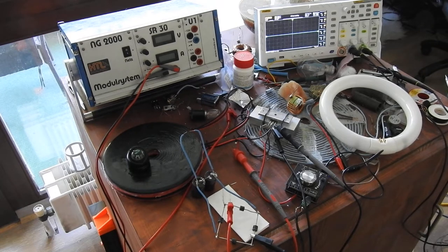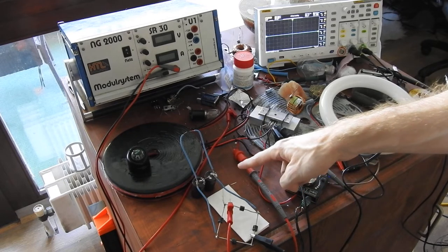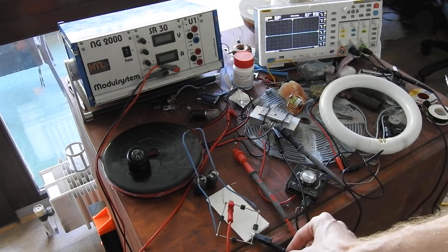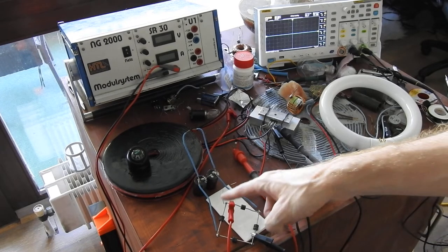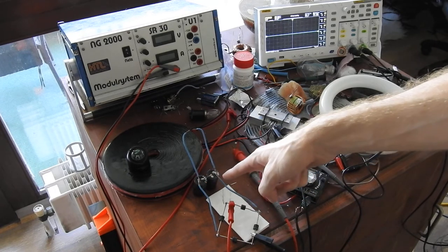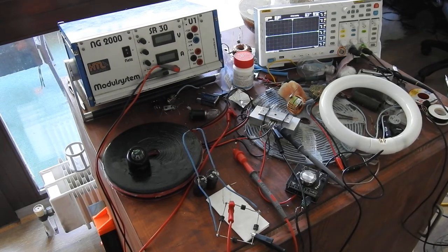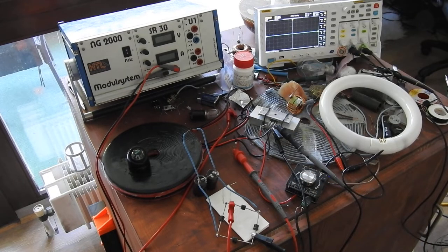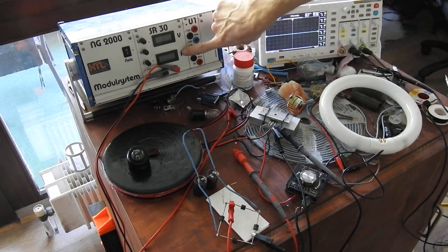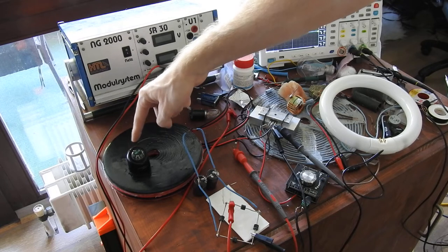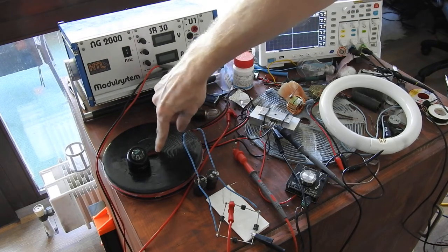So first off I will charge these capacitors. As you can see here this is my high voltage output and this is my ground. And this is connected to a full bridge rectifier that charges these two capacitors. And now I will show you while it is charging what will happen.